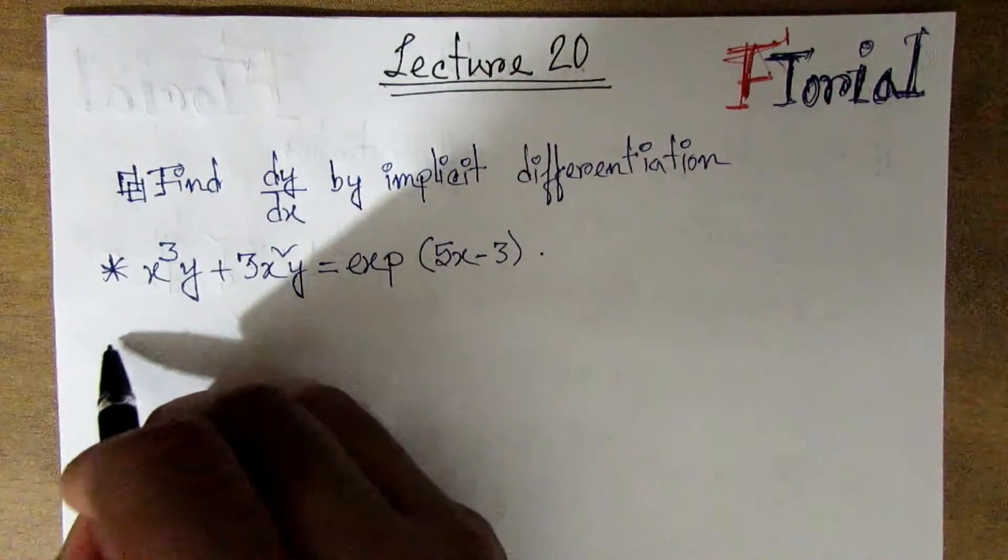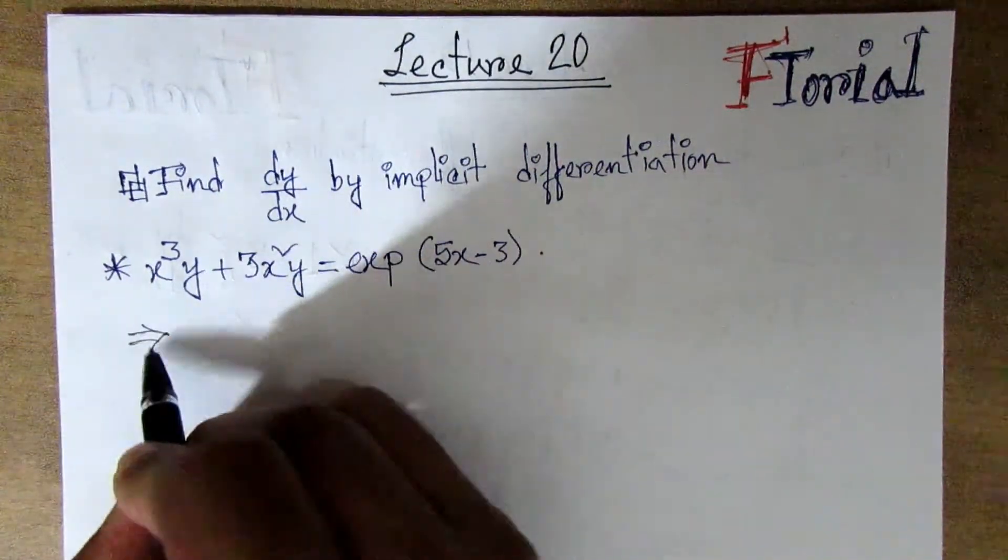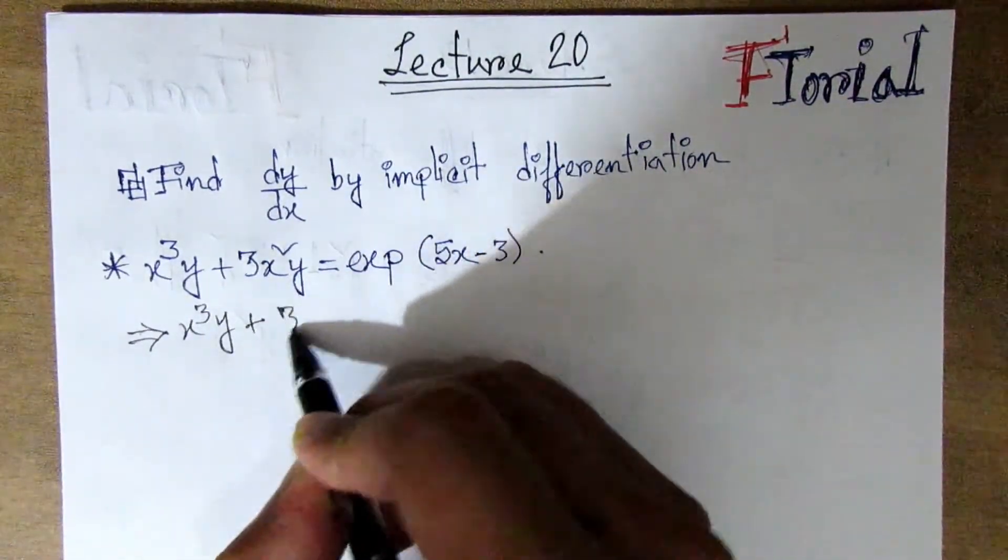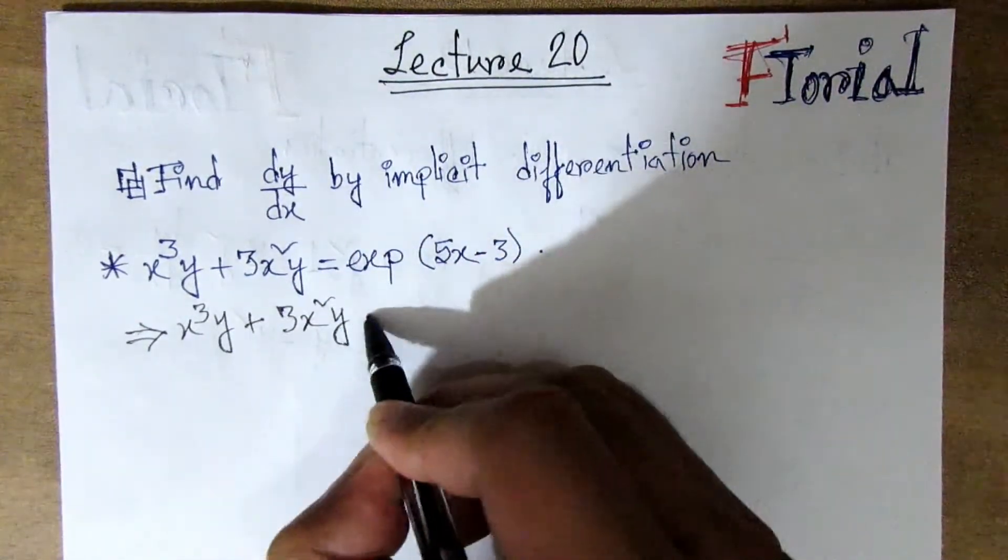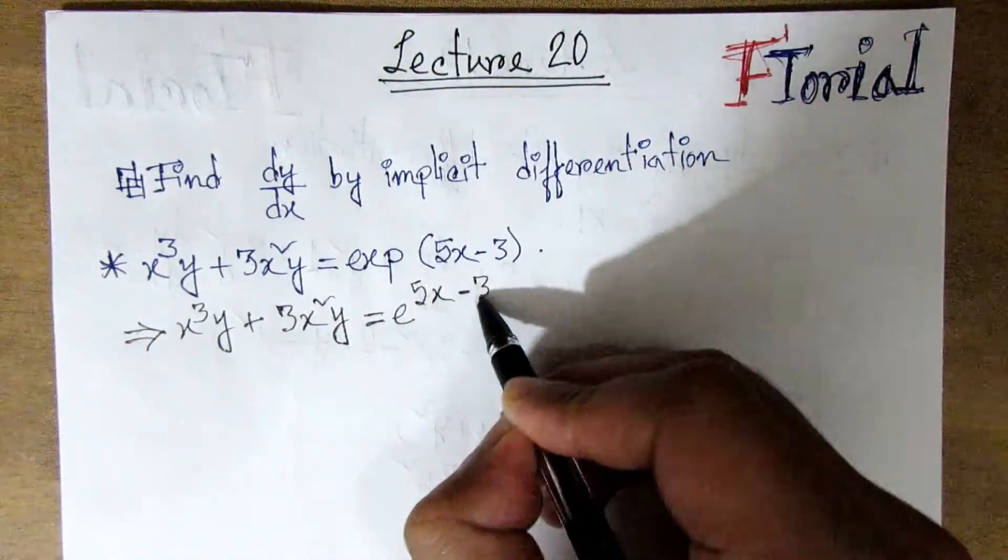The equation we have is 3y³ + 3x²y = e^(5x-3). We need to find dy/dx using implicit differentiation.